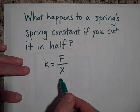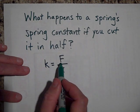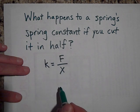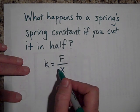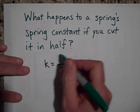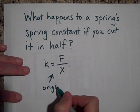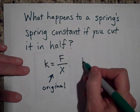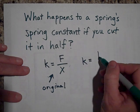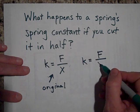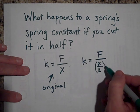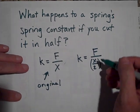You only have half the coils. And so because only half the coils are there, when you put the same force, you'll only get half the stretch. So when you cut a spring in half, this is the original, then we cut it in half and the same force will only give you half the stretch.